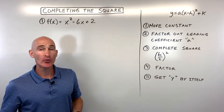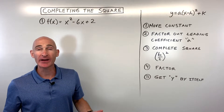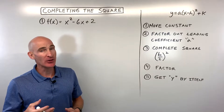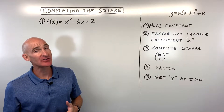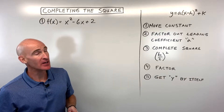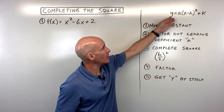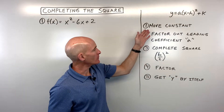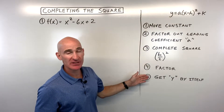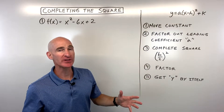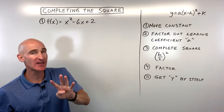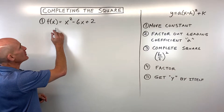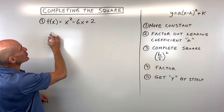In this video you're going to learn how to write a quadratic function in vertex form by using the completing the square method. We're going to take a quadratic function and put it into this form, and we're going to follow these steps to help us through this. We're going to go through four examples. Let's start with the first example and then you can practice some on your own.